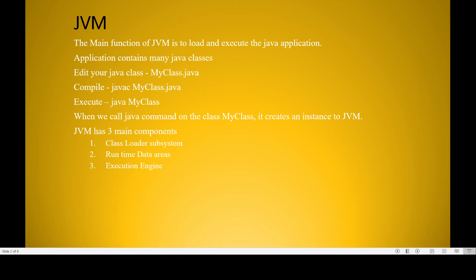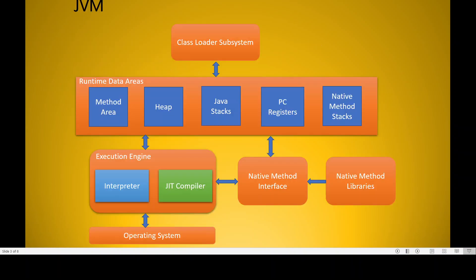The JVM has a couple of subsystems: the class loader subsystem, the runtime data areas, and the execution engine. The runtime data areas include the method area, heap area, Java stacks, program counter registers, and native method stacks. The execution engine has an interpreter and JIT compiler, and it communicates with the native method interface, libraries, and operating system.